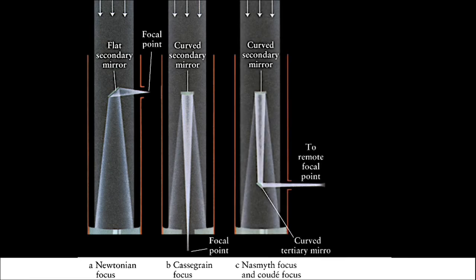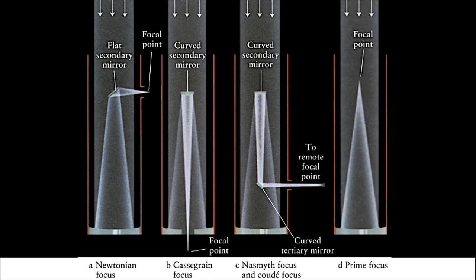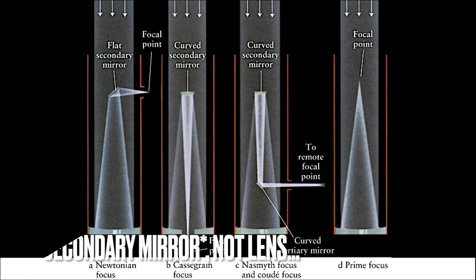A Nasmith or Cude focus reflects the incoming light off of not one, not two, but three mirrors. And lastly, we have the prime focus of the telescope, which shows you exactly where the light will converge if there is no secondary lens.